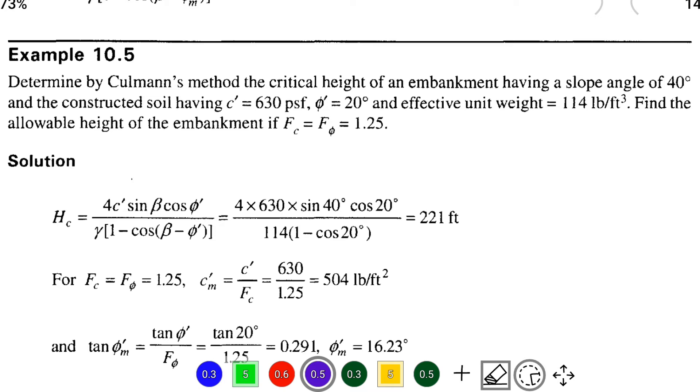The constructed soil has C' equal to 630 PSF, angle of internal friction equal to 20 degrees, and effective unit weight equal to 114 pounds per cubic foot.